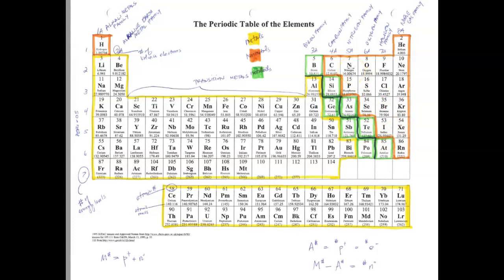The best way to identify them is by the staircase line on your periodic table — it may already be drawn as a solid black line. Everything that touches the solid black staircase is called a metalloid.